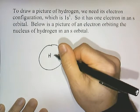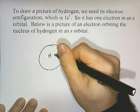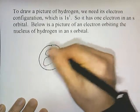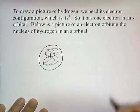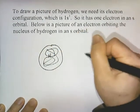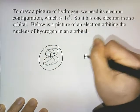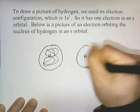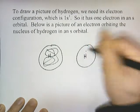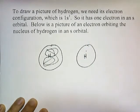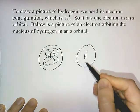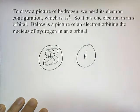Remember, the electron isn't going in a circle — it's just sort of randomly moving around this space. I could have drawn it with the dot on the bottom, left, or right. It doesn't really matter.